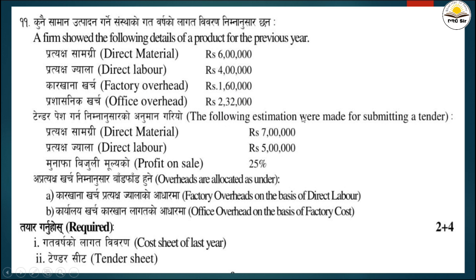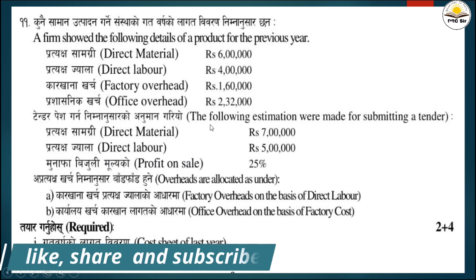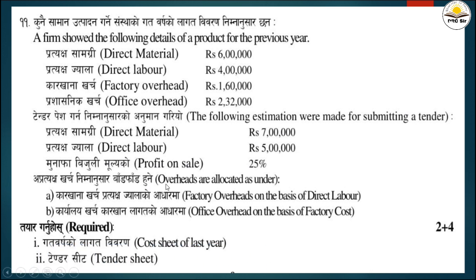The following estimation were made for submitting a tender: direct material 7 lakh, direct labor 5 lakh, and profit on sale is 25 percent. The overheads are allocated as under: factory overhead on the basis of direct labor and office overhead on the basis of factory overhead.